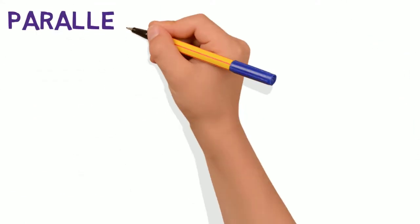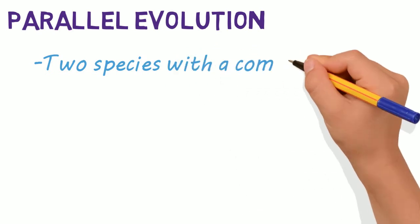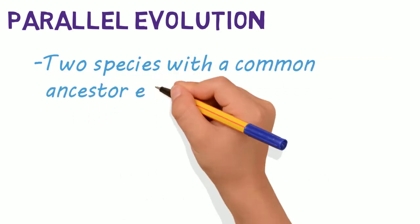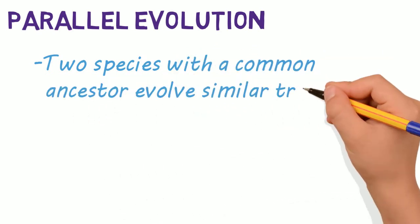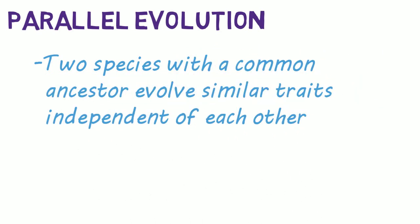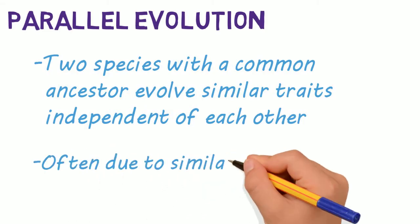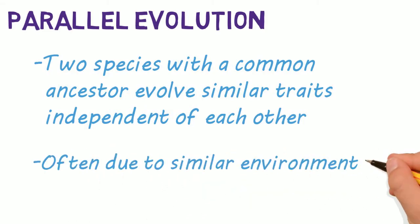Parallel evolution occurs when two species that share a common trait due to a common ancestor evolve similar traits independent of one another. This is often due to enduring similar environmental pressures.